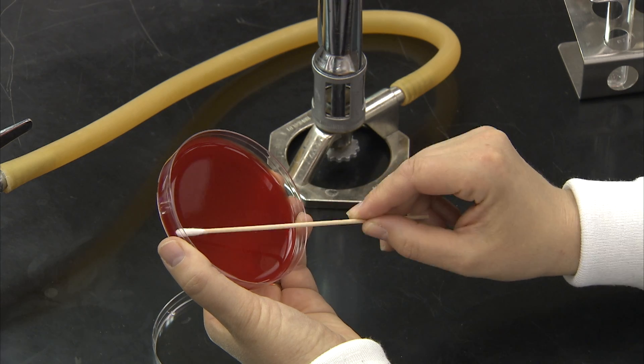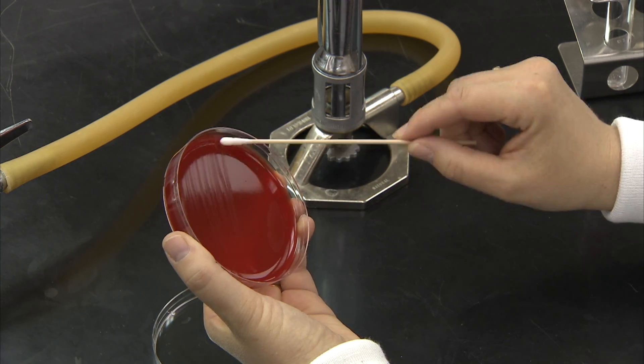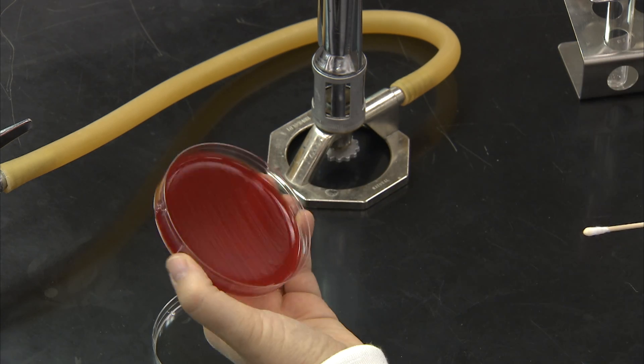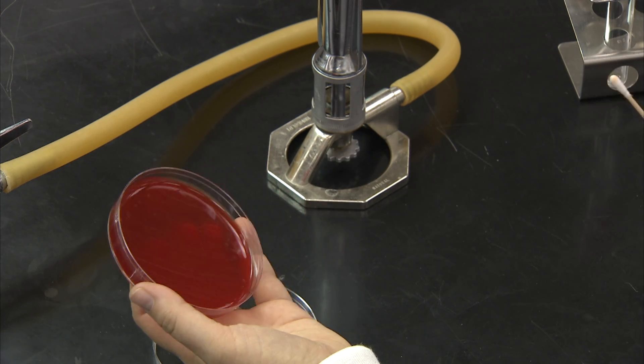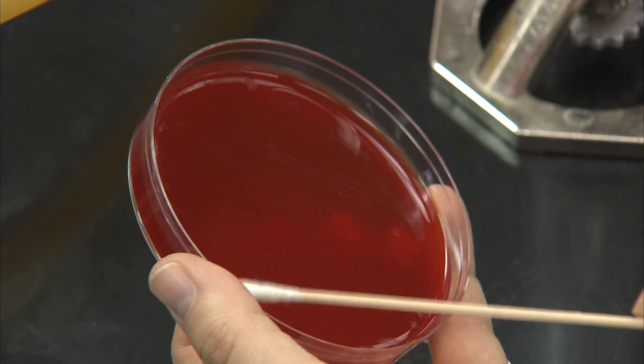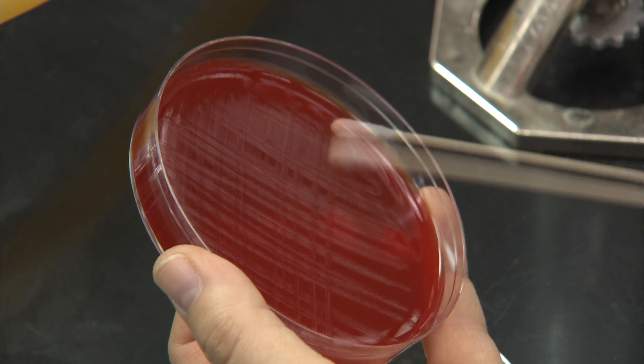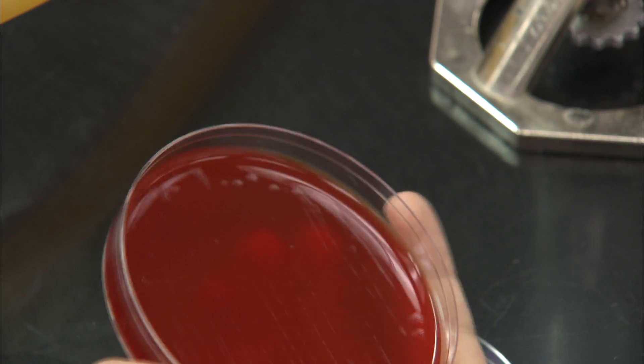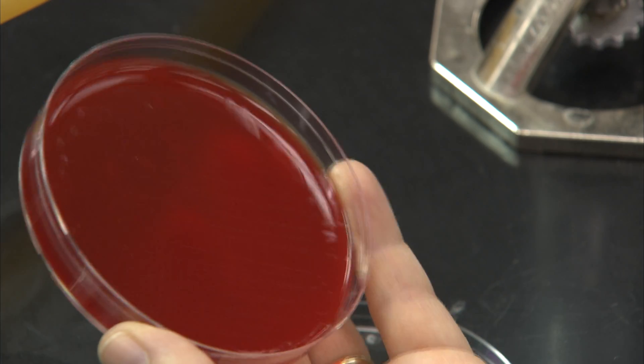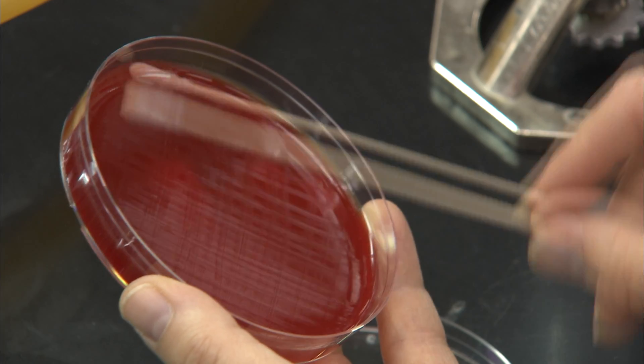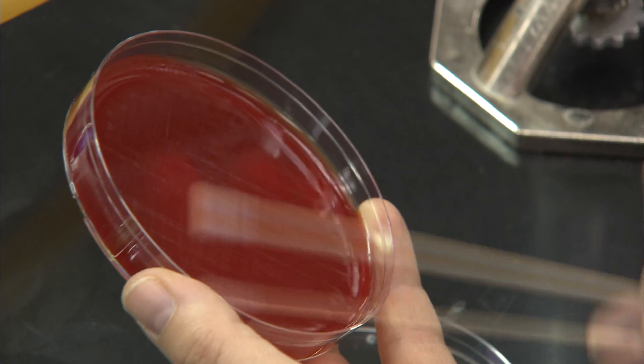If the goal is to get a plate with a lawn of confluent growth, a swab is used to paint the plate back and forth. If the swab was covered on all sides with bacteria, it is turned as it is zigzagged. Generally, three or four passes are made on the plate in different directions to get a lawn with no gaps.